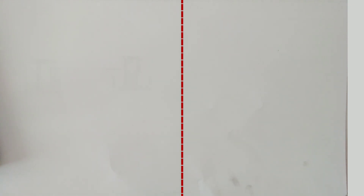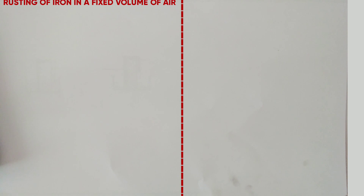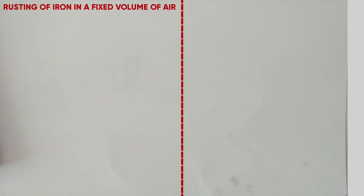Welcome learners. Today we are continuing the topic of air and combustion. In the previous lesson we learned about the experiment used to determine the percentage of active air — burning candles in a fixed volume of air and oxidation of copper in a fixed volume of air. Today we are looking at rusting of iron in a fixed volume of air and smoldering of phosphorus in a fixed volume of air.